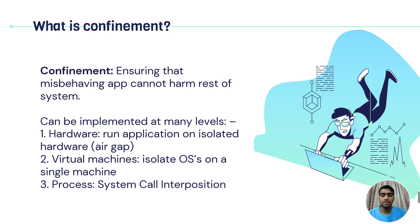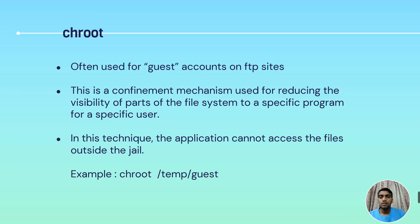The third level involves process, also called system call interposition. Chroot, also known as change root, is used for guest accounts on FTP sites. It is a confinement mechanism used for reducing the visibility of parts of the file system to a specific program or user. In this technique, the application cannot access files outside the jail.